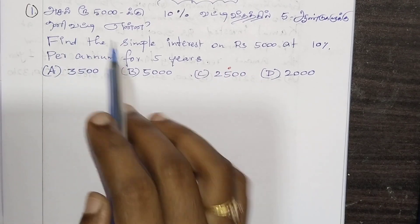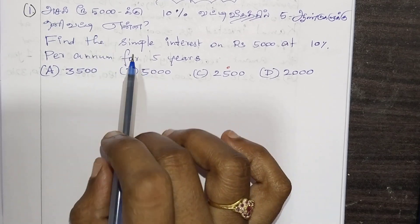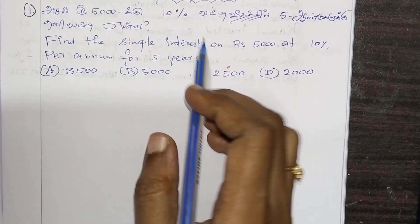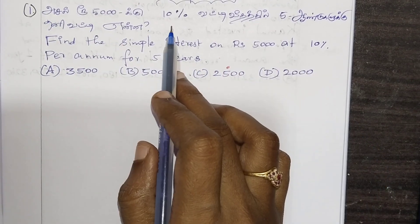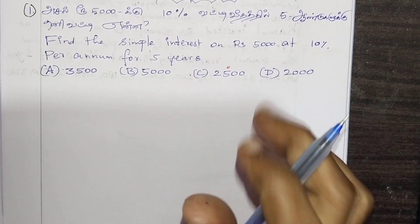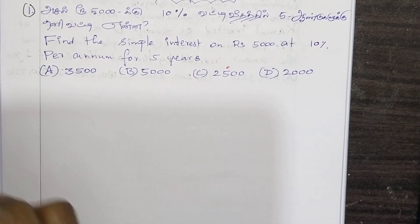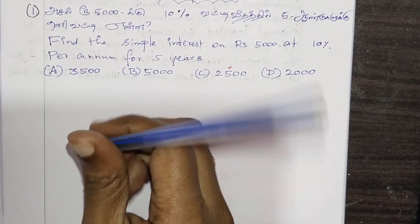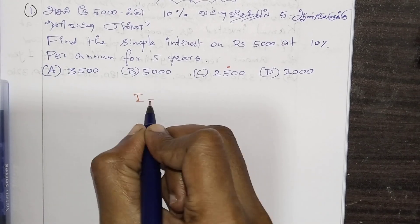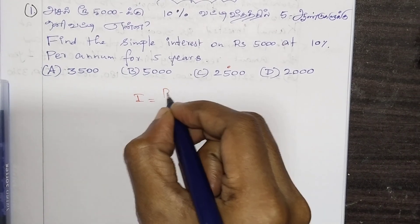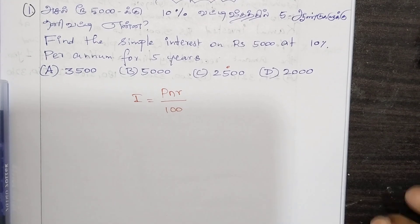Let's talk about this. Principal amount. Rate of interest. Number of years is 5. Let's talk about this — what do we do? One formula.